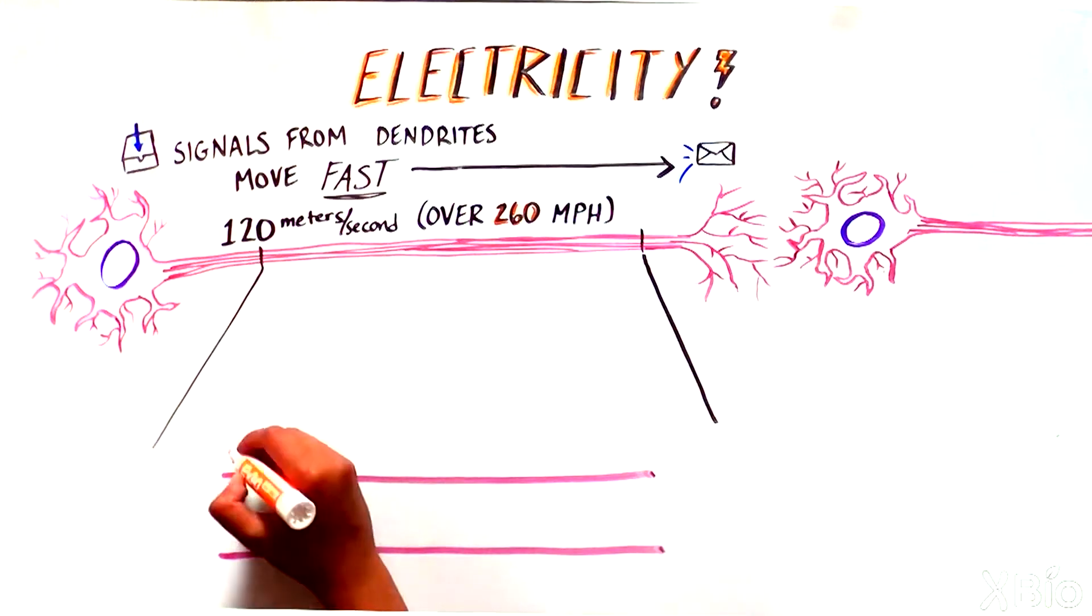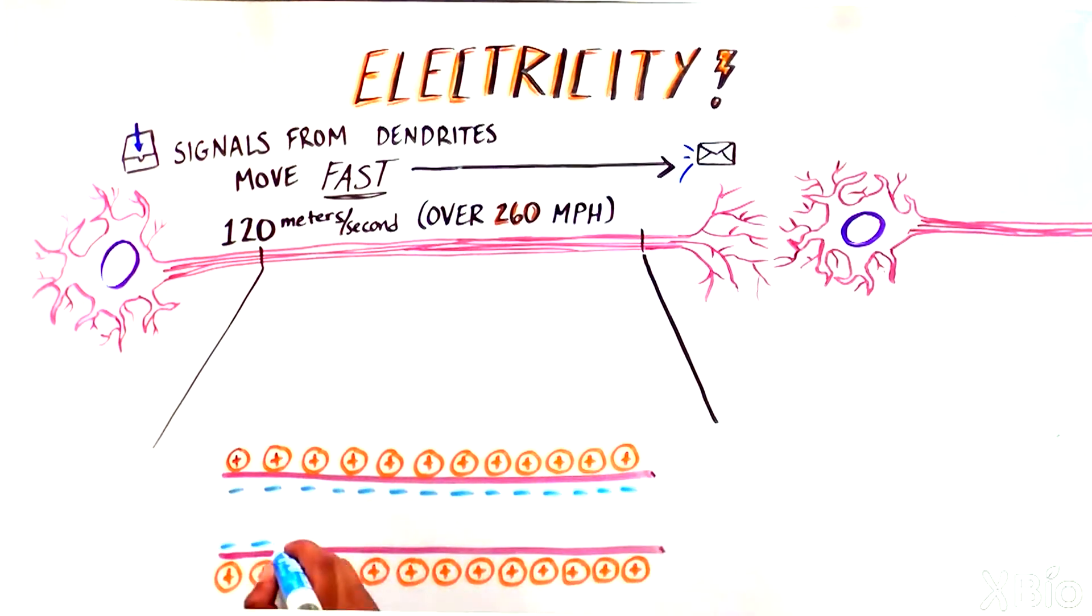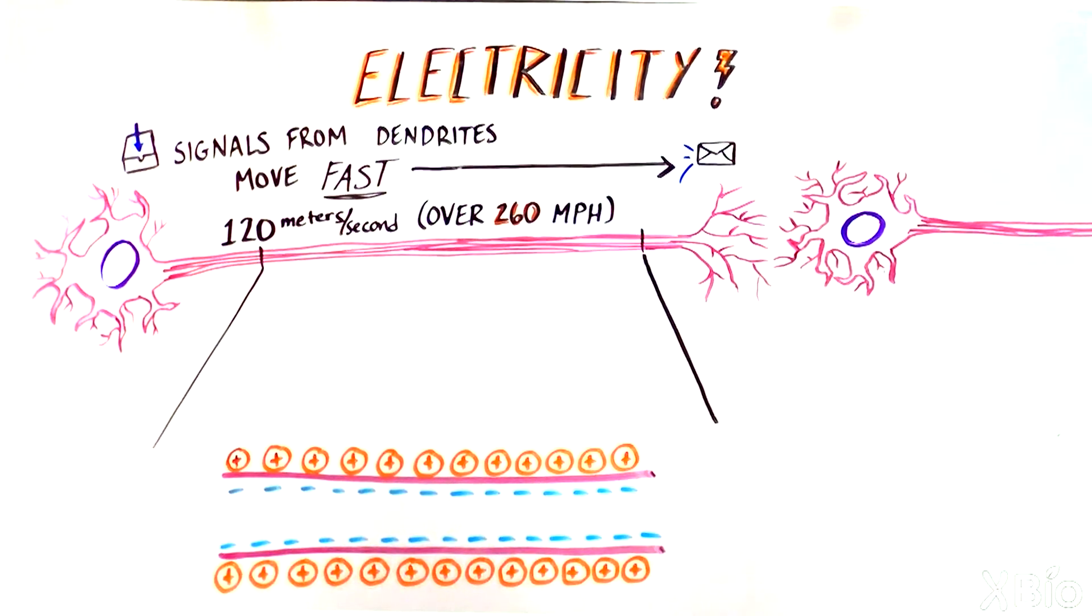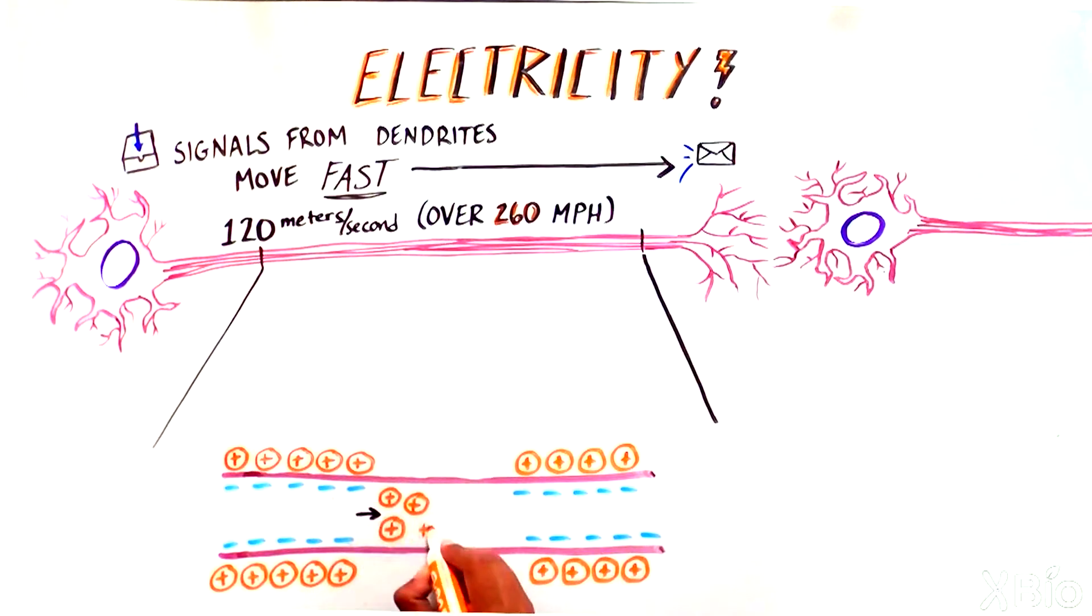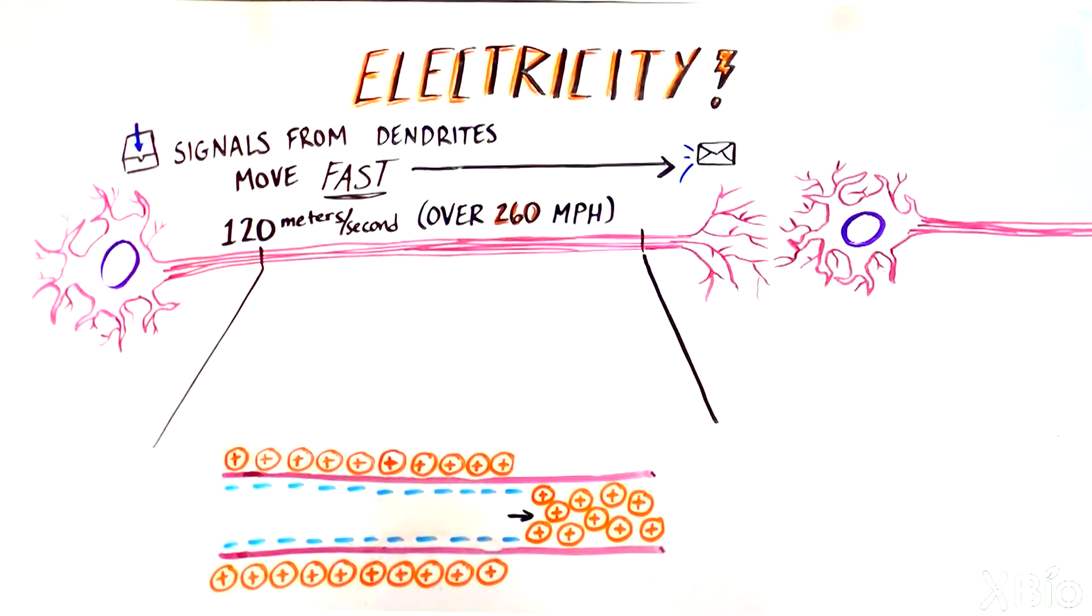These signals are created by the movement of ions, a type of atom that carries an electrical charge across the cell membrane. This movement changes the electrical charge on the inside of the cell versus the outside of the cell, resulting in an electrical signal called an action potential.